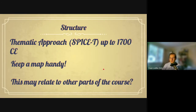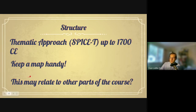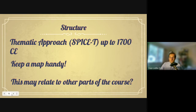This presentation will use a thematic approach — the AP World themes known as SPICE-T — covering up to about 1700, through Unit 4. Instead of one gigantic timeline, we'll take a thematic approach. Keep a map handy and be prepared to reference different places at different times. This will include parts of the course beyond Unit 2, so keep your eyes open for things that come up after 1450.